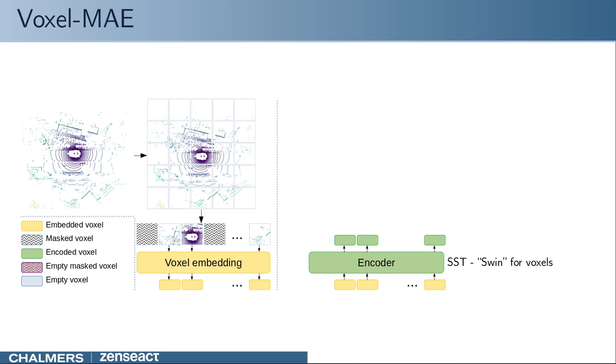The voxels, which have not been masked, are encoded with SST, which is a transformer backbone using the shifting windows idea from SWIN, but in 3D. This can be compared to the use of vanilla transformers in previous work.